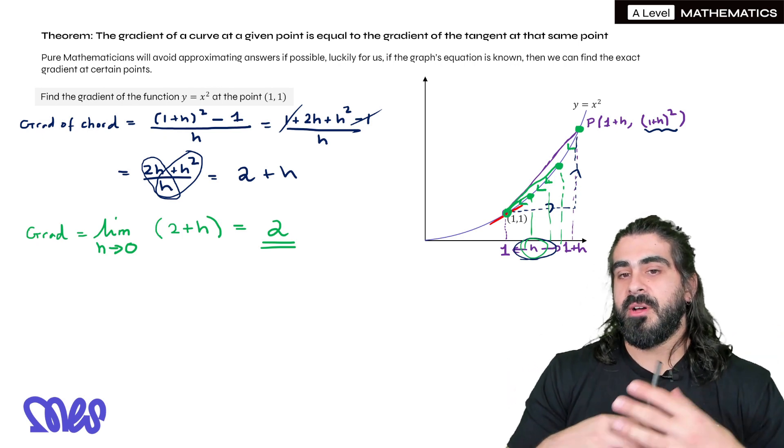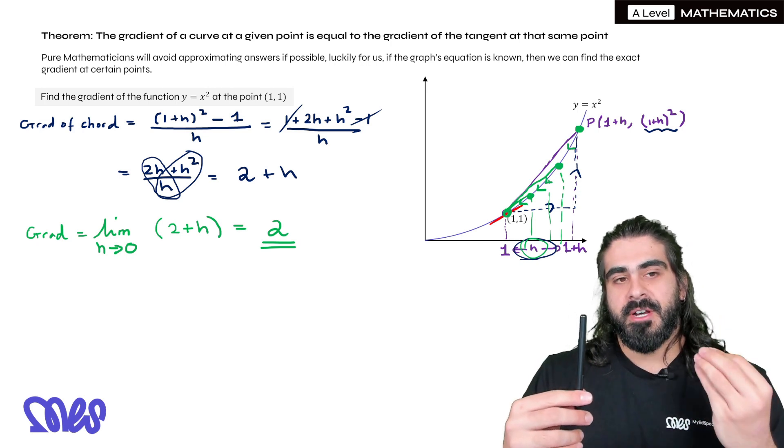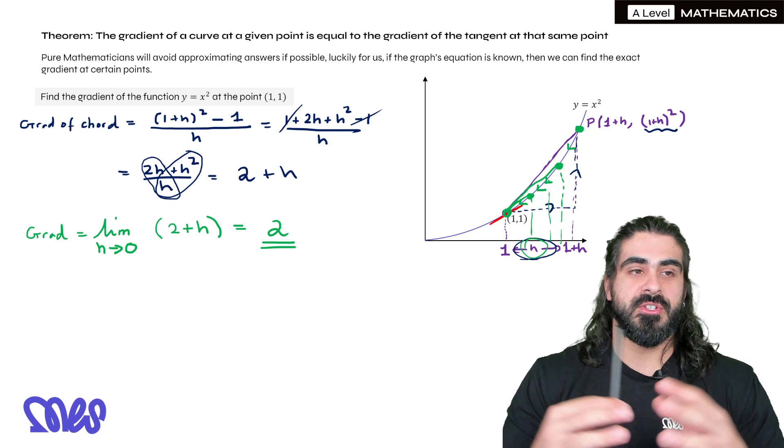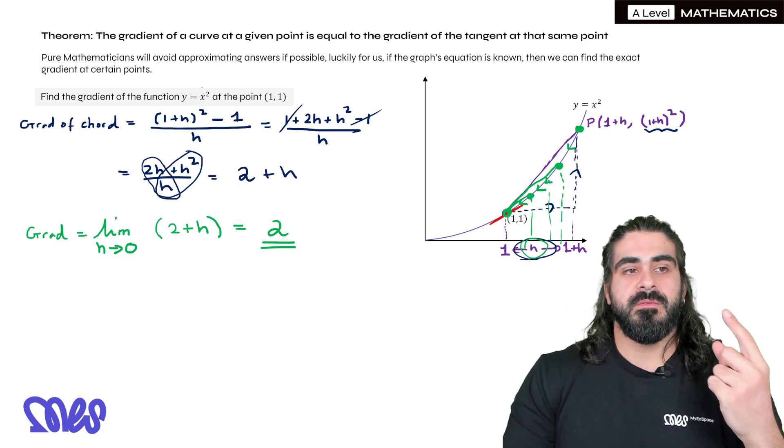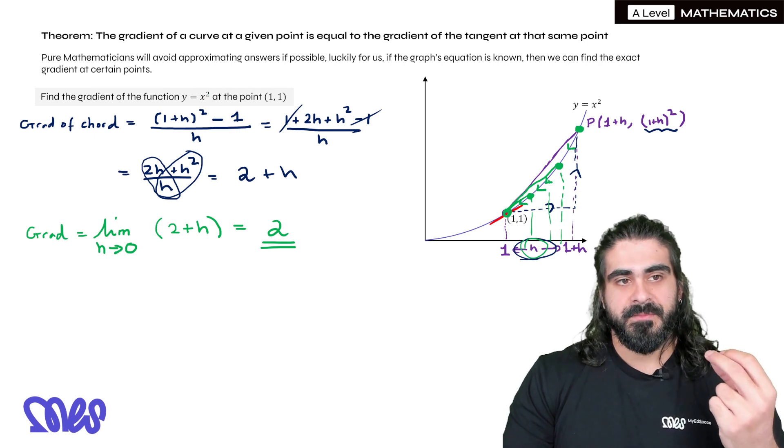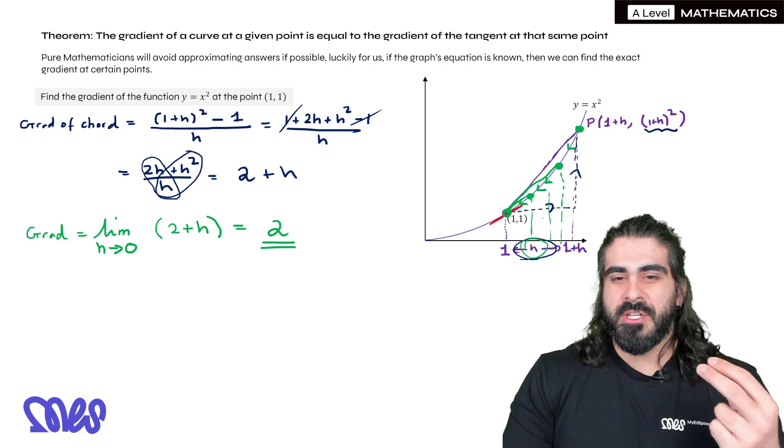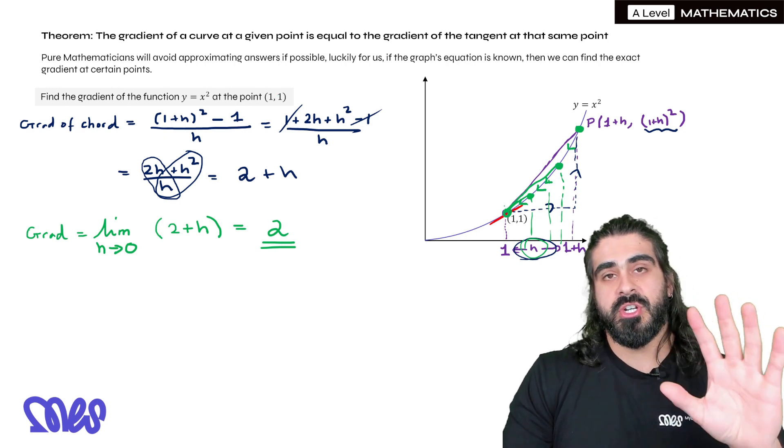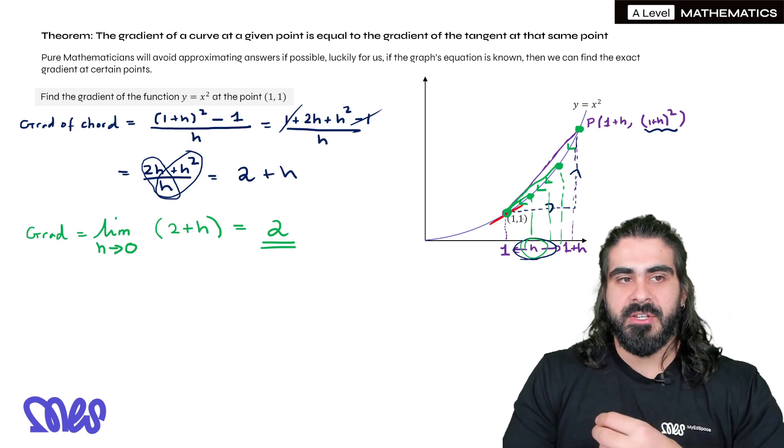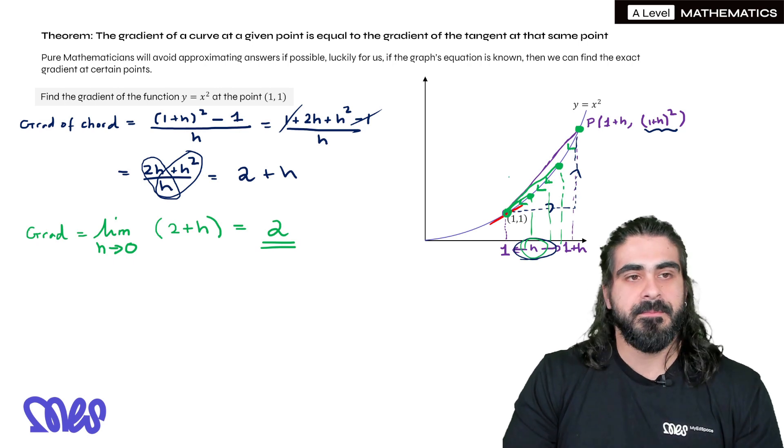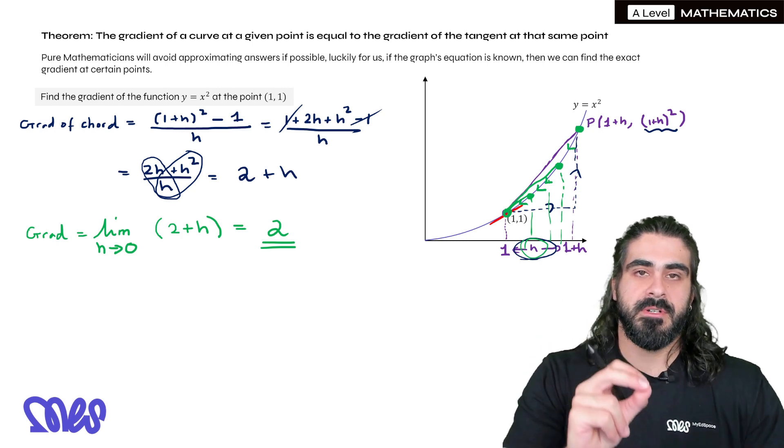And you can apply this to any function. So I'm going to show you one example like I've just done now. In the next episode, I'm going to show you how to do it generally. We're going to look at how to find the general gradient function of x squared, so that if you ask me to find the gradient at (1, 1), I don't need to do this process specifically for (1, 1). I know what the general gradient function is, and you only need to tell me the x value you're interested in, and I can sub it into the gradient function. It will just tell me the gradients there and then.